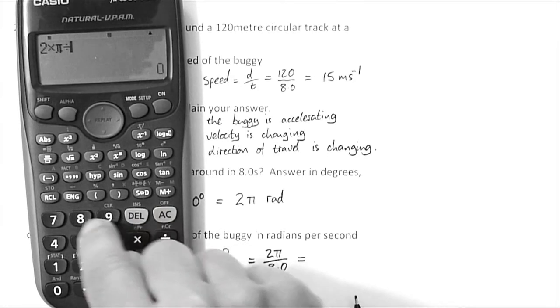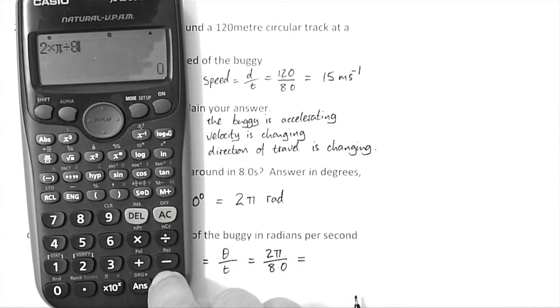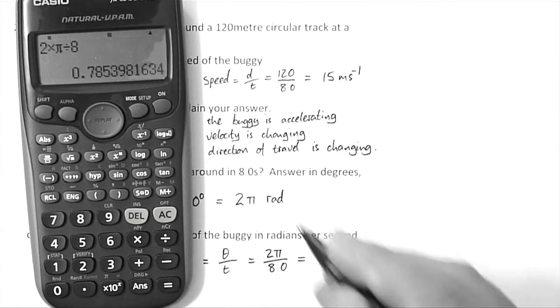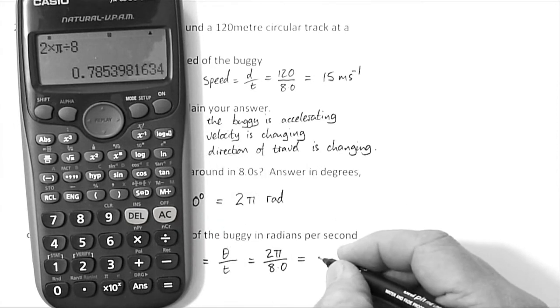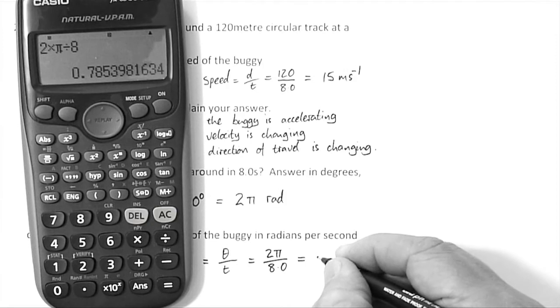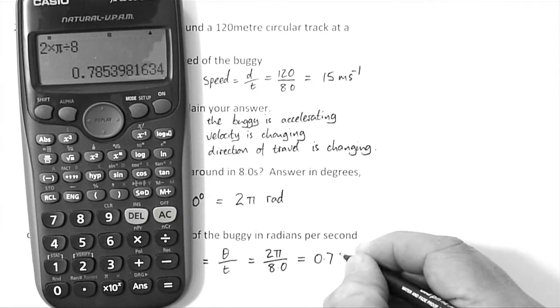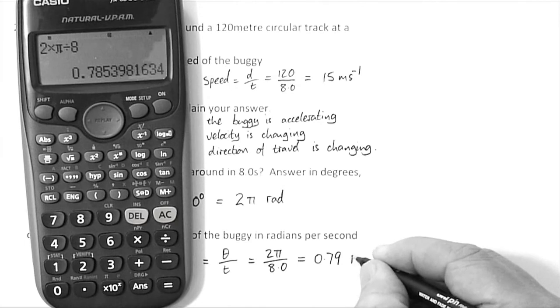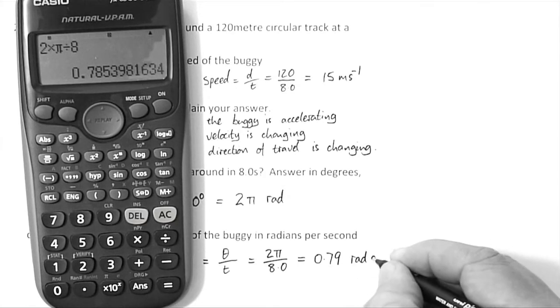and now I need to divide that by 8. And the answer is, well, I'll give it to 2 significant figures. So that's 0.79 radians per second.